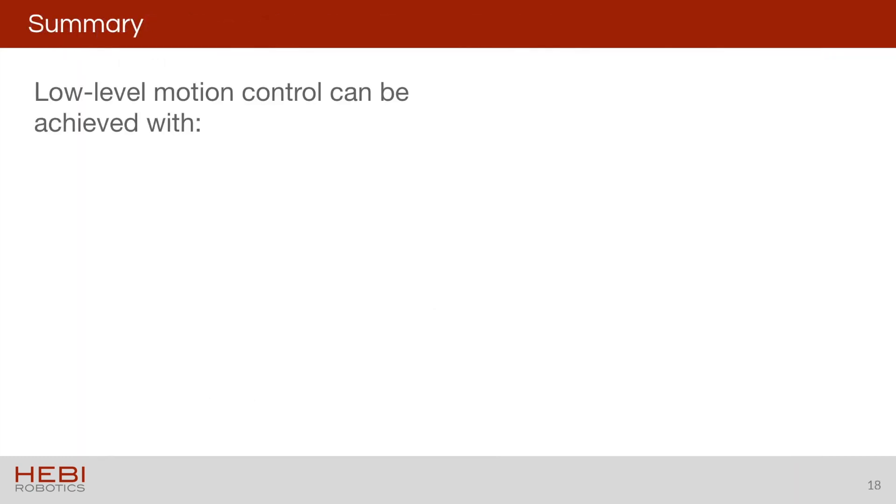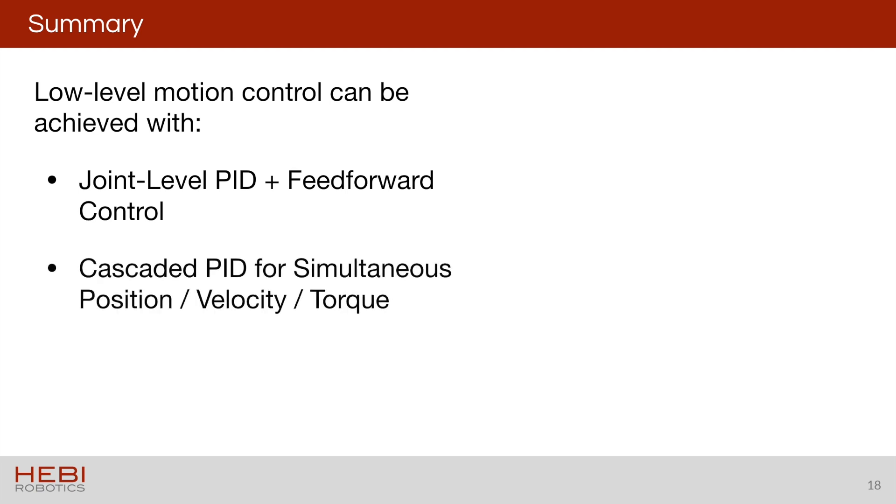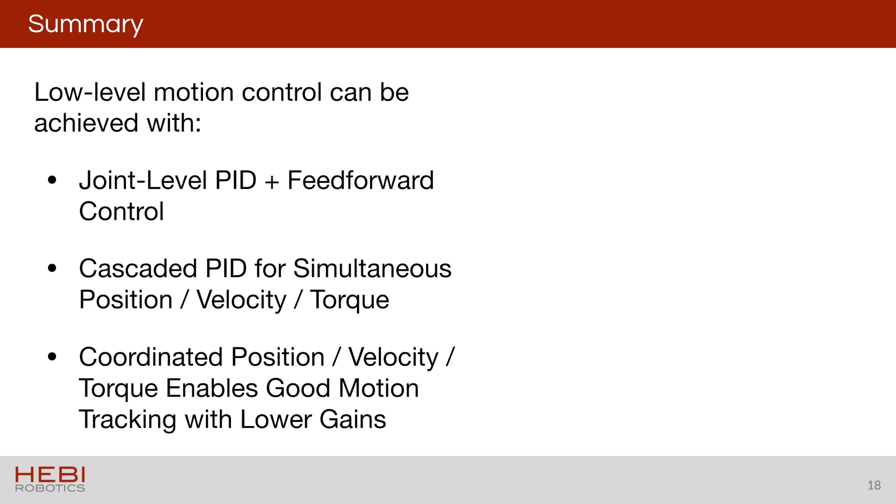So in summary, we've covered some methods that we can use to achieve low-level control. In this case, we use joint-level PID controls and feed-forward control. And again, talked about feed-forward at two levels. The inner loops of velocity and torque have feed-forward terms that help improve their tracking. But at a high level, we think of things as position, velocity, and torque. So we use these cascaded PID loops to essentially track a position, but feed in velocity and torque commands as well to improve that position tracking. And we showed how doing all of this can enable really good motion control with low gains. And we think this is important for creating robots that act in the real world, in places where you might need to be interacting with a person, something where you need to be safe when you wind up deviating from your trajectories, and just overall have a system that is more consistent and reliable.